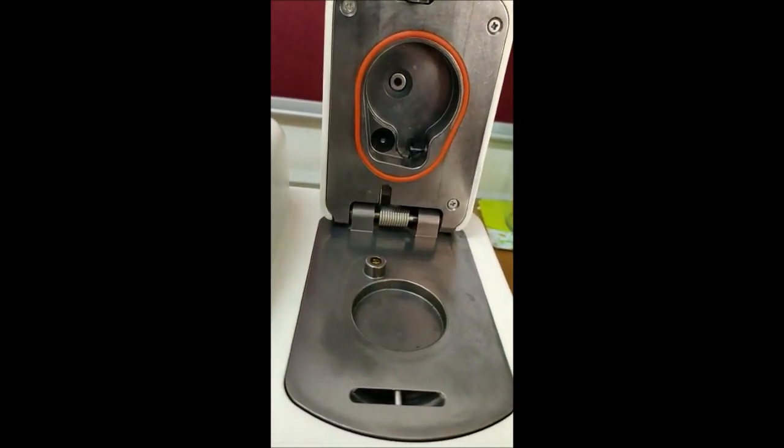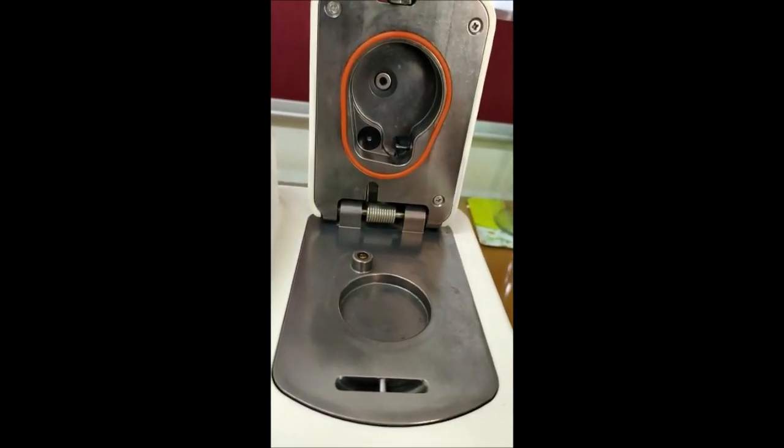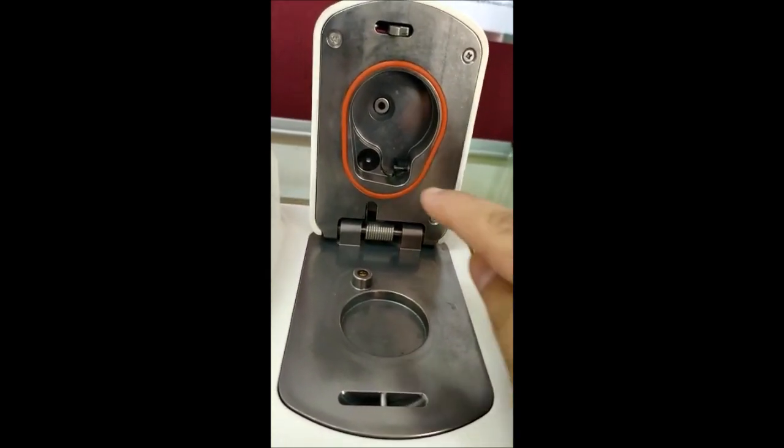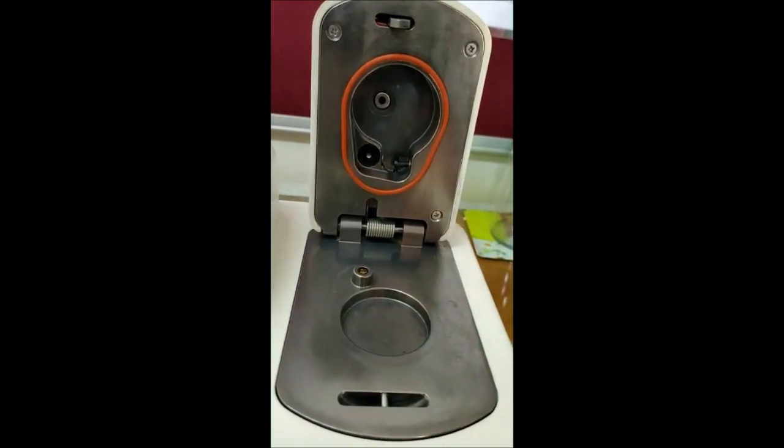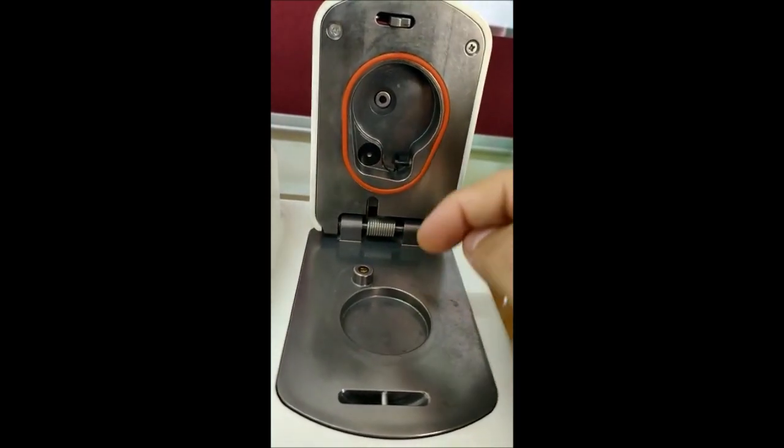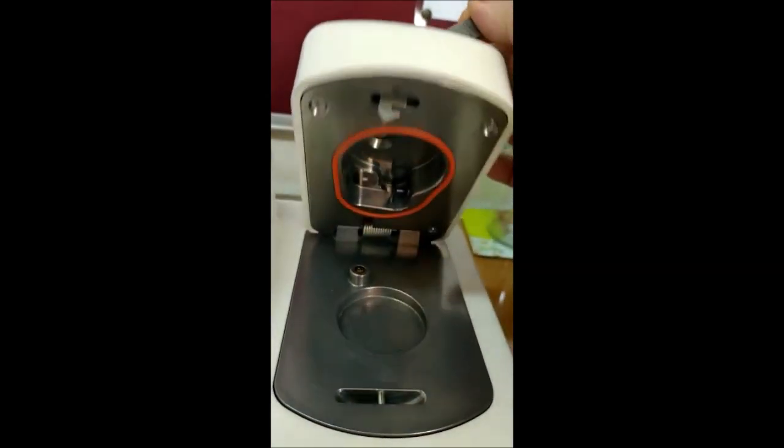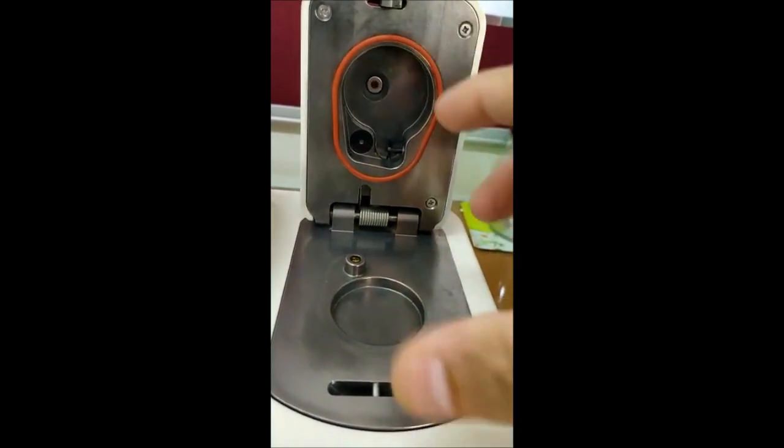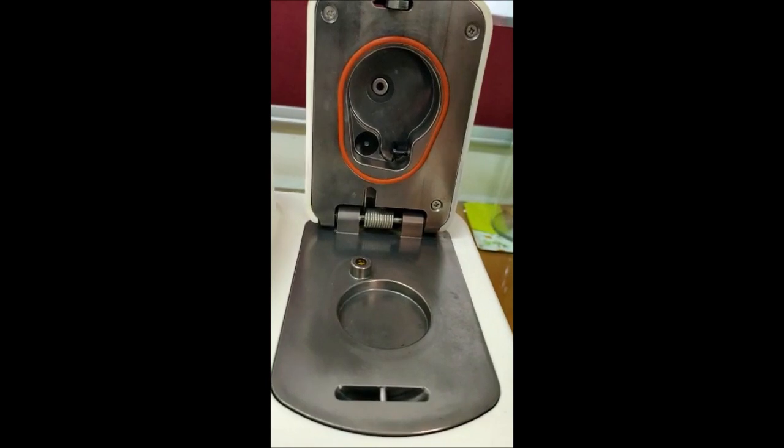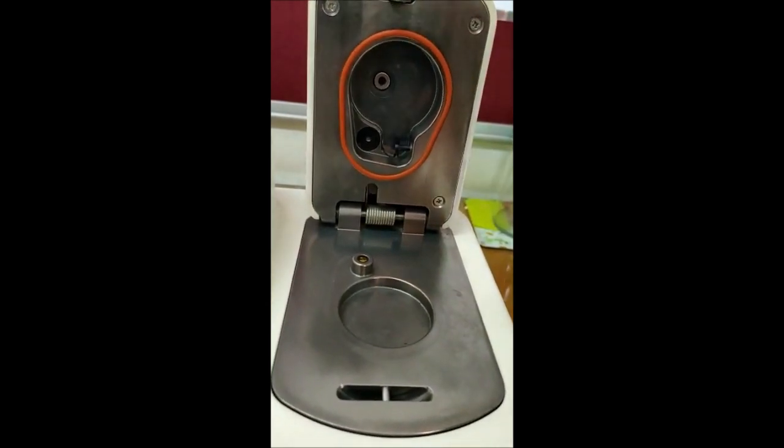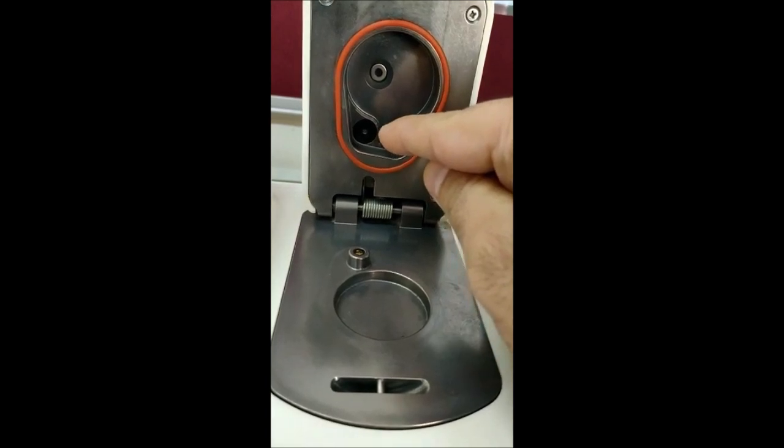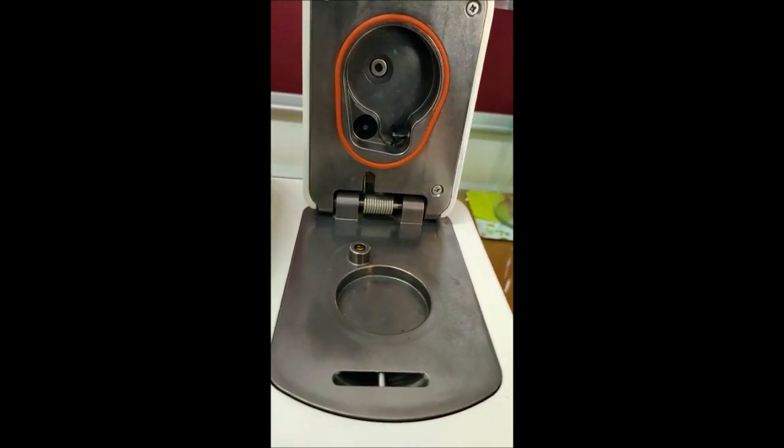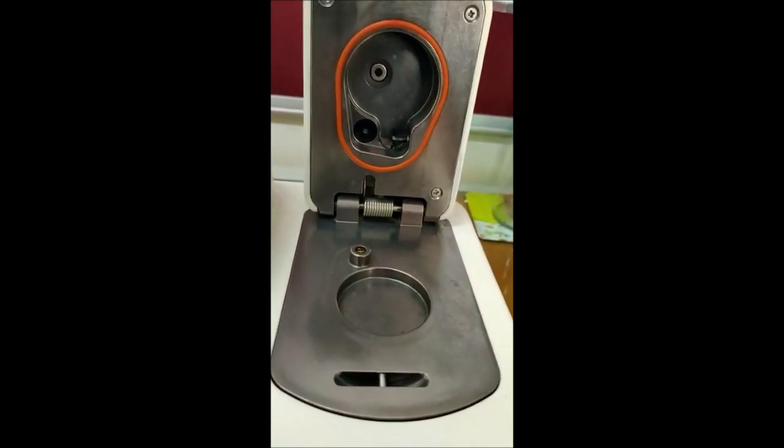How it works? This is basically a chilled mirror dew point sensor based instrument. We have a small mirror, the small dot you can see here. This is a chilled mirror and this is the optical sensor. When we close this chamber the mirror will sit exactly above the optical sensor. What happens when we place the sample, the moisture will migrate in the chamber. And because we are chilling this mirror it will record the dew point temperature. And from that dew point temperature we will get measurement of water activity.